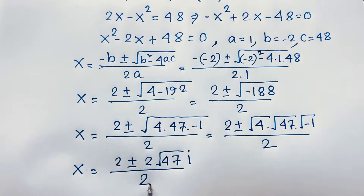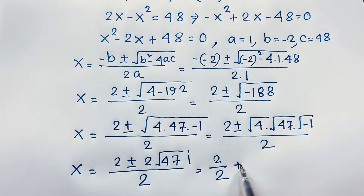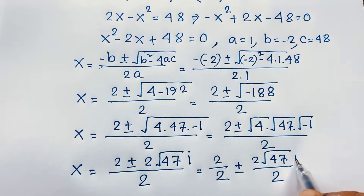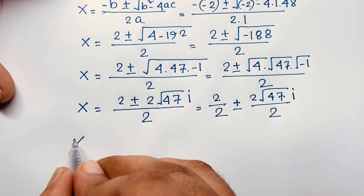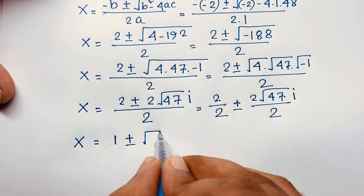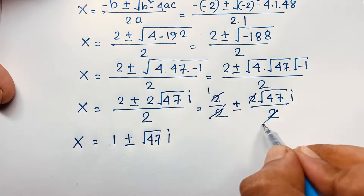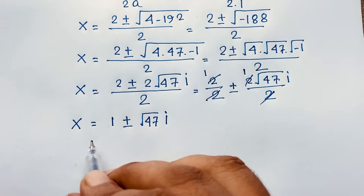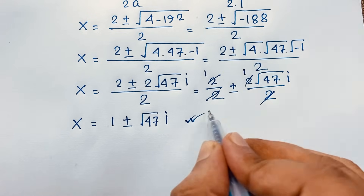Separating the fraction, it will be 2 over 2 plus or minus 2·√47·i over 2. The 2s cancel, giving x equal to 1 plus or minus √47·i. So our final solution is x equals 1 plus or minus √47·i — both are complex solutions, both are complex numbers.